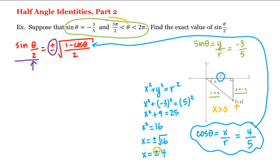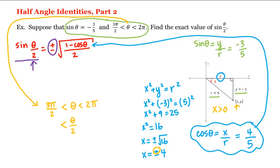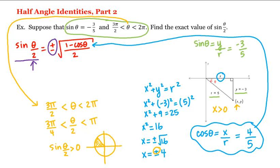We're given that theta lies between three pi halves and two pi. However, we don't want to know where theta lies — we want to know where theta over two lies. So let's divide everything by two. Three pi halves divided by two is three pi fourths, and two pi divided by two is pi. Therefore, theta over two lies between three pi fourths and pi, which means theta over two is in quadrant two. Since sines are positive in quadrant two, sine of theta over two is greater than zero, so we choose the positive value in our formula.